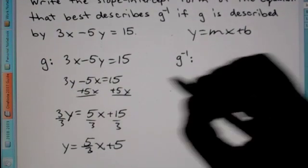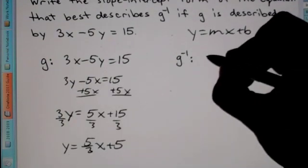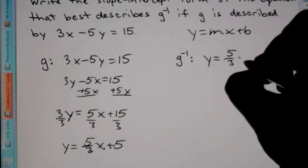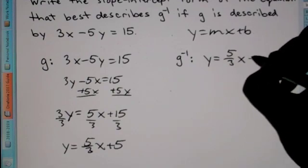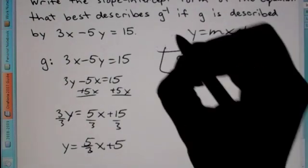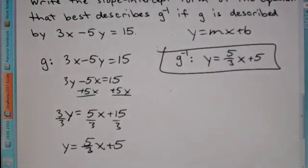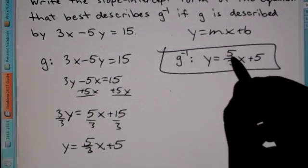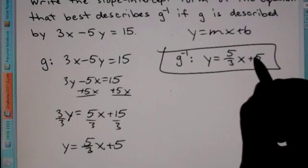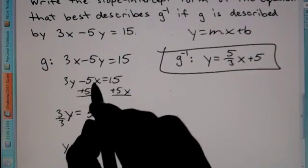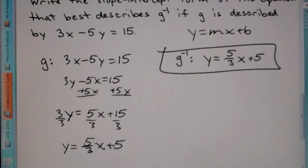So that's what our inverse is: y is equal to 5 thirds x plus 5. This would be our answer, in slope-intercept form y equals mx plus b. Switch x and y, get y by itself.